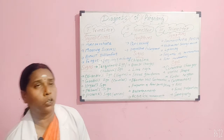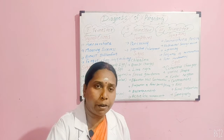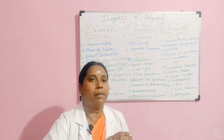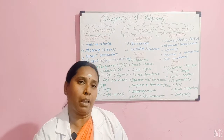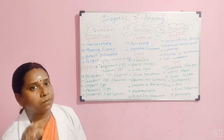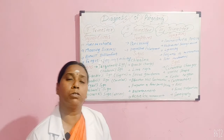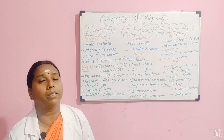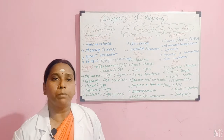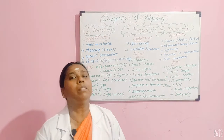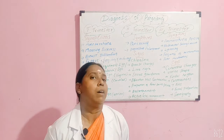Then comes ballottement — the movement of the fetal head. When you move the baby's head, you can see it moving from side to side due to the pressure applied from the abdomen. That is called ballottement, usually felt in the second trimester. Then we have active fetal movement: by the second trimester, the mother can feel that the baby is active, hungry, or moving — all of which indicate she is progressing well with her pregnancy.